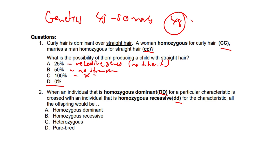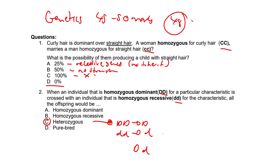Let's go to the answer first. The answer is definitely C. A homozygous dominant individual, DD, can only contribute the dominant allele D, and a homozygous recessive individual, small dd, can only contribute the recessive allele, small d. All offspring will inherit one dominant allele, capital D, and one recessive allele, small d, resulting in the heterozygous genotype Dd.